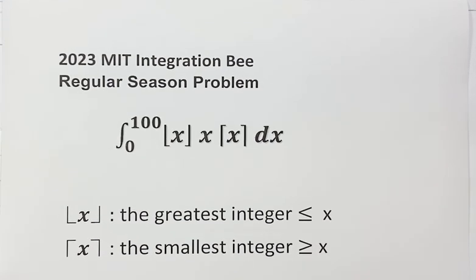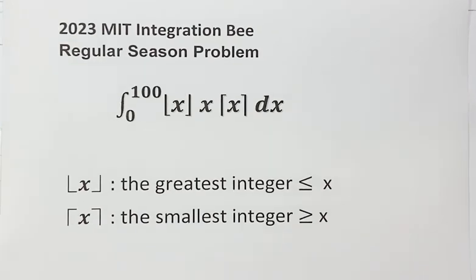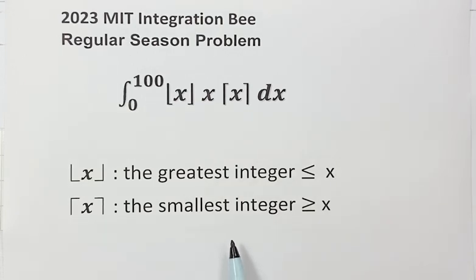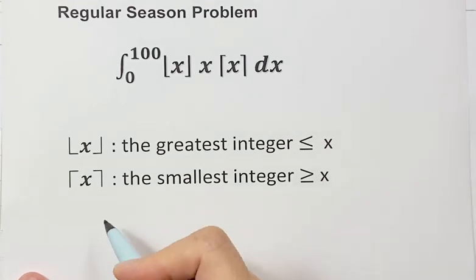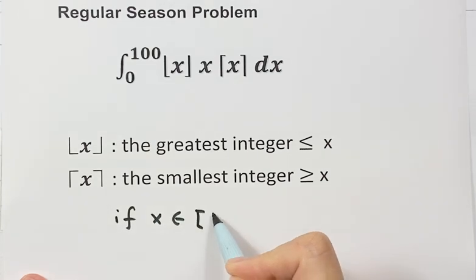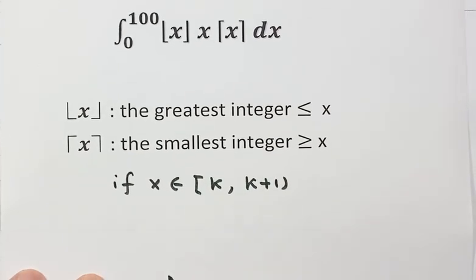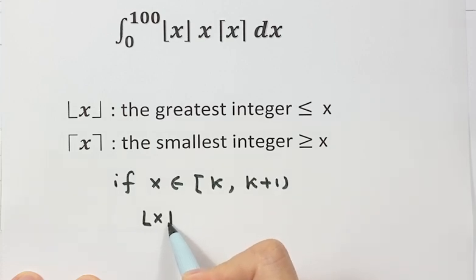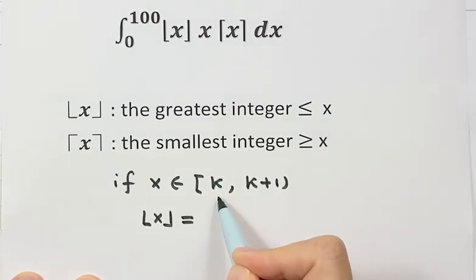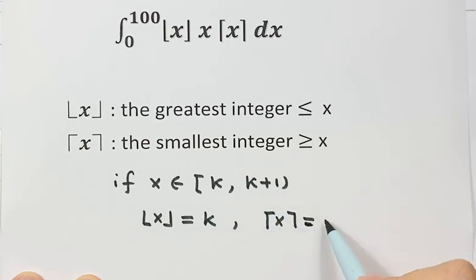So what is the floor of x? That is the greatest integer less than or equal to x. The ceiling of x is the smallest integer greater than or equal to x. So that means if we have x inside the interval from k to k+1, where k is an integer, then the floor of x equals the lower bound k, and the ceiling of x equals the upper bound k+1.